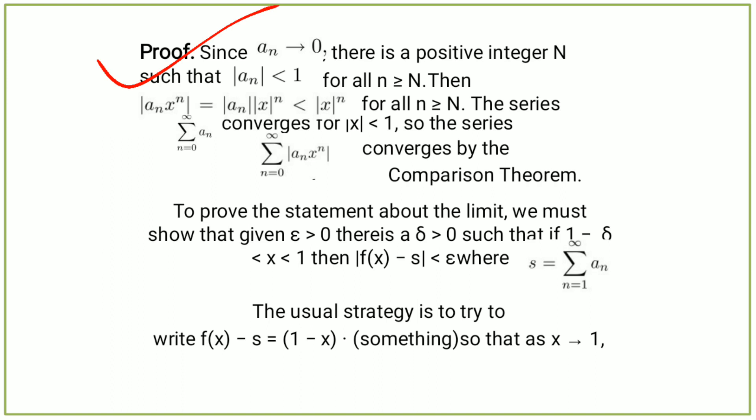Proof: Since aₙ tends to 0, there is a positive integer N such that mod of aₙ is less than 1 for all n greater than or equal to N. Then mod of aₙxⁿ equals mod of aₙ times mod of xⁿ, which is less than xⁿ for all n greater than or equal to N. The series summation from n equals 0 to infinity of xⁿ converges for mod of x less than 1.